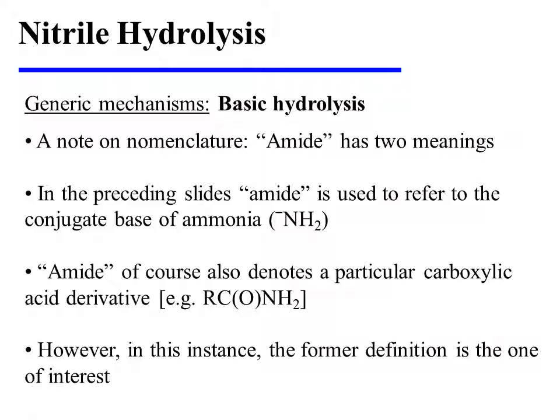A note on nomenclature is useful at this point. Amide has two meanings. In the preceding slides, amide is used to refer to the conjugate base of ammonia. Amide also denotes a particular carboxylic acid derivative. However, in this instance, it is the former definition that is the one of interest.